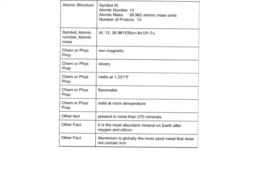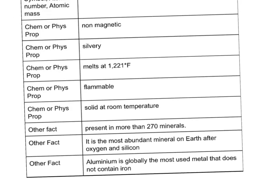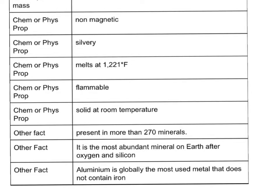There are also some fun facts, like aluminum is present in more than 270 minerals. It is the most abundant material on earth after oxygen and silicon, and aluminum is globally the most used metal that does not contain iron.